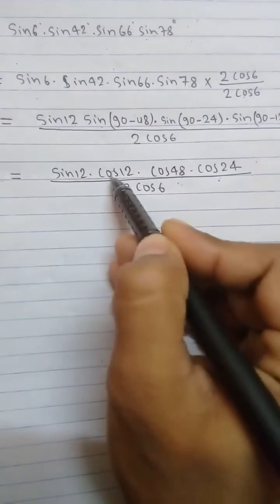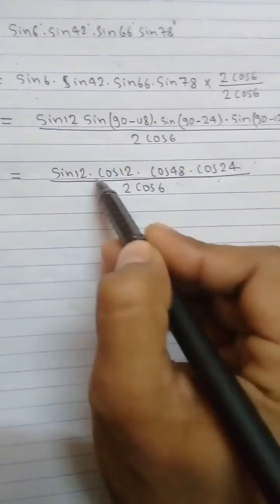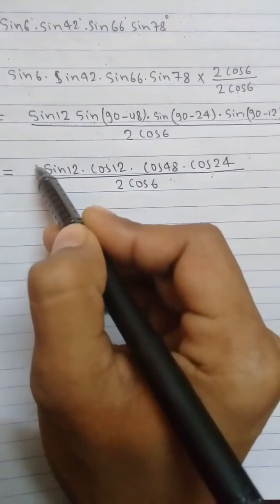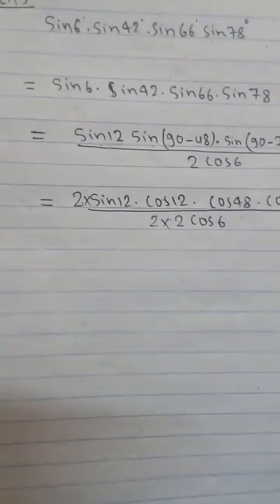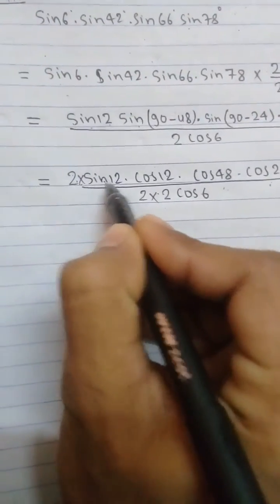All we need is 2 here, and if we multiply here by 2, then we have to multiply here also by 2. If I multiply here by 2, it will also become 2, then we can apply the formula 2sina into cosa again.